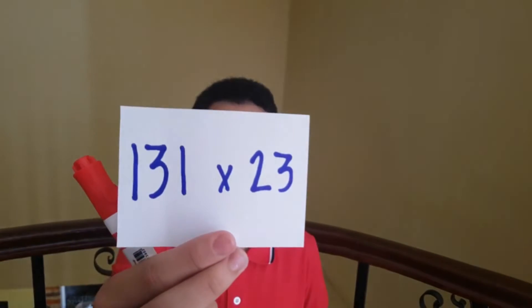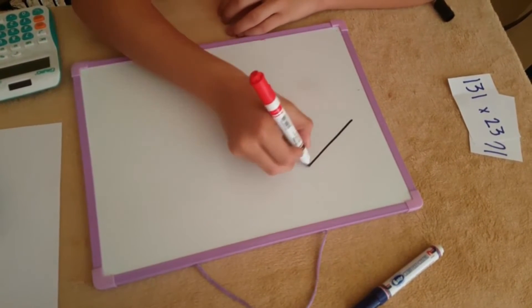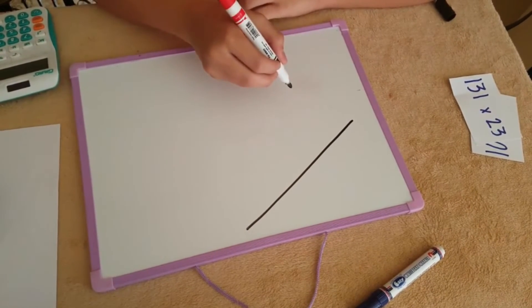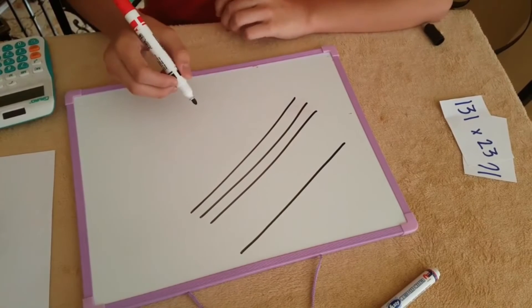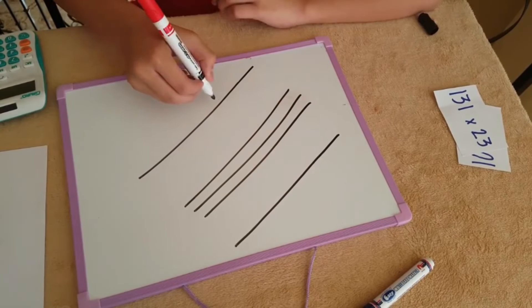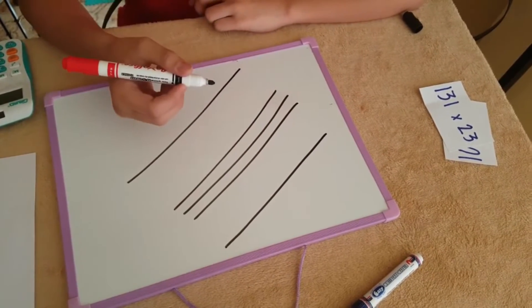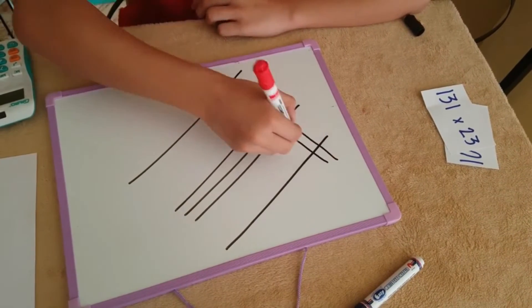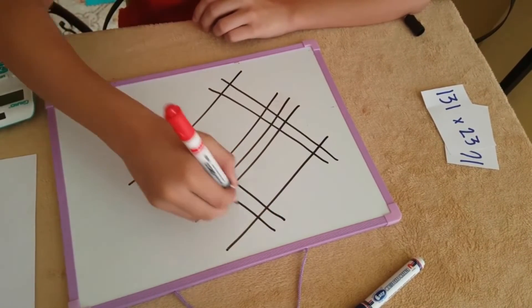Now let's go one step further and multiply 131 times 23. Let's start by writing the lines for the first digit, give a little space, write the lines for the second digit, give a little space again and write the lines for the third digit — that's 131. The multiplier of 131 is 23, so we write two lines intersecting the first lines we made, give a little space and write the lines for the second digit.